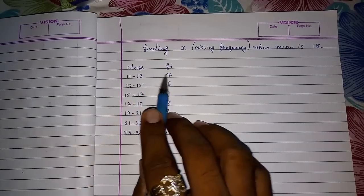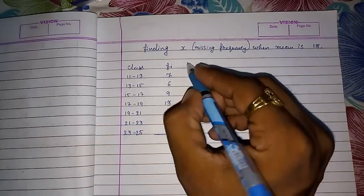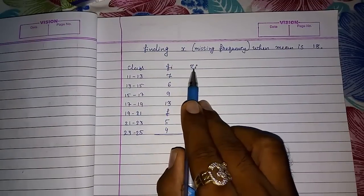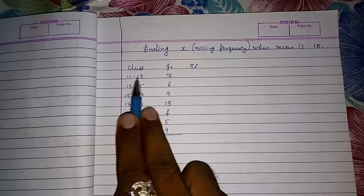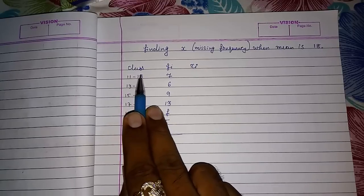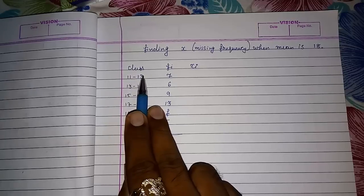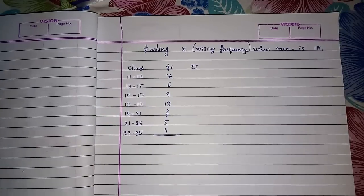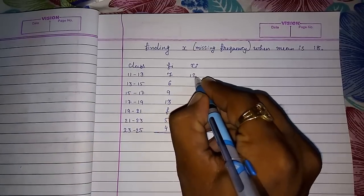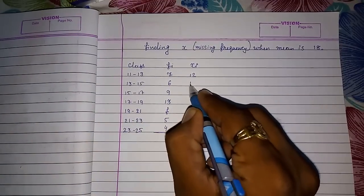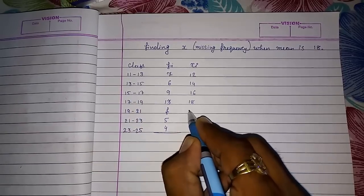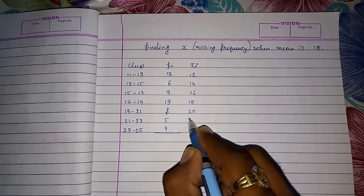First, class is given to you, so directly we cannot multiply class and frequency. So first we have to find out XI. XI means the class mark, or you can say the midpoint of these two numbers. If you want to find midpoint, add these two and divide by two. But directly also we come to know that the midpoint of 11 and 13 is 12, then 14, 16, then 18, 20, 22, and 24.